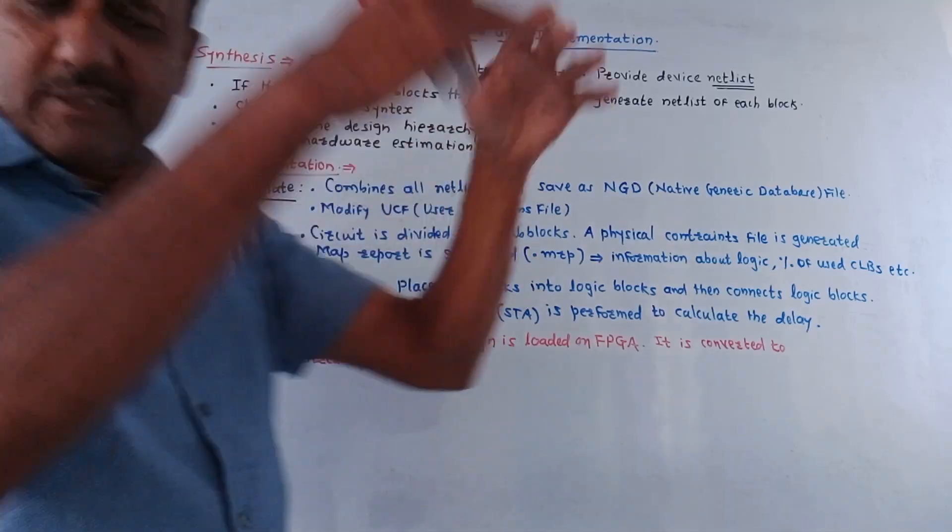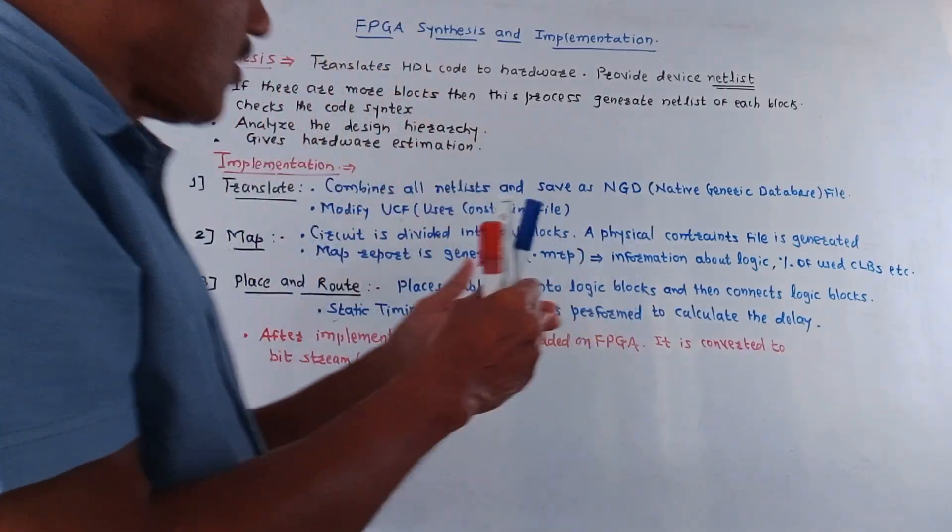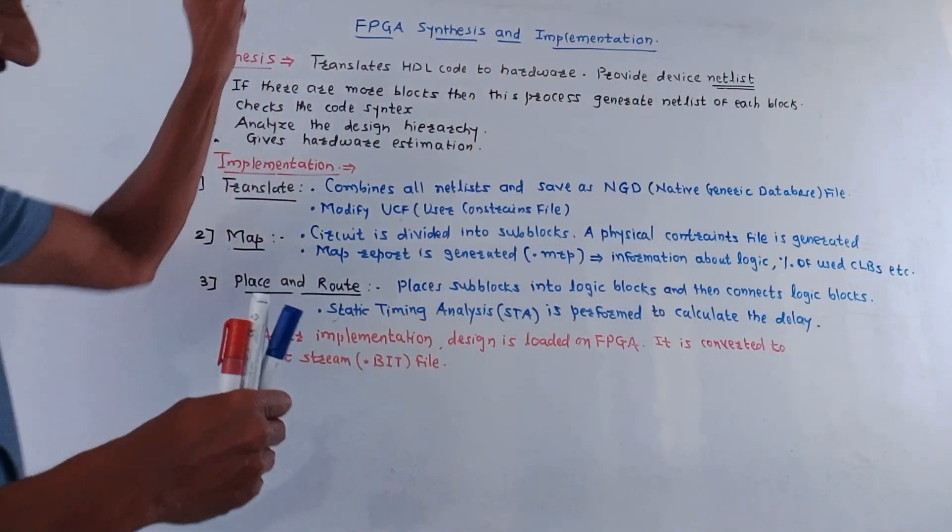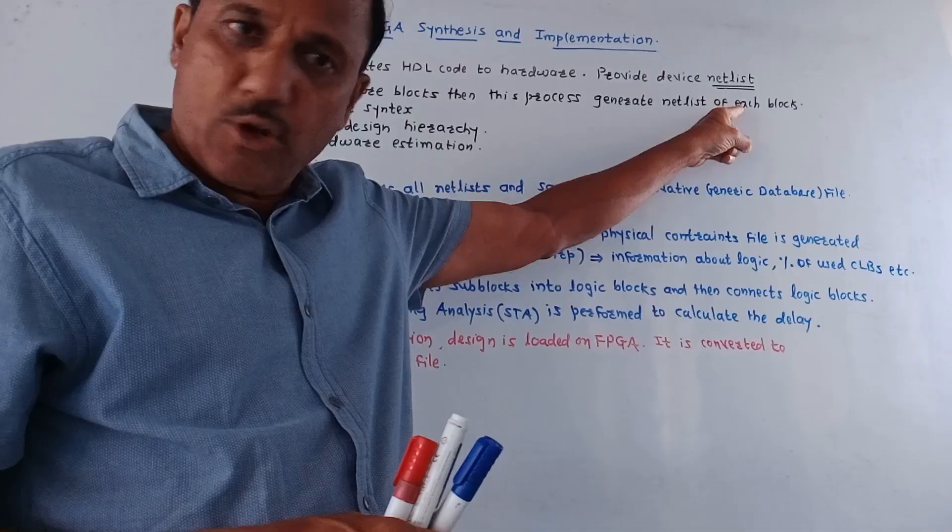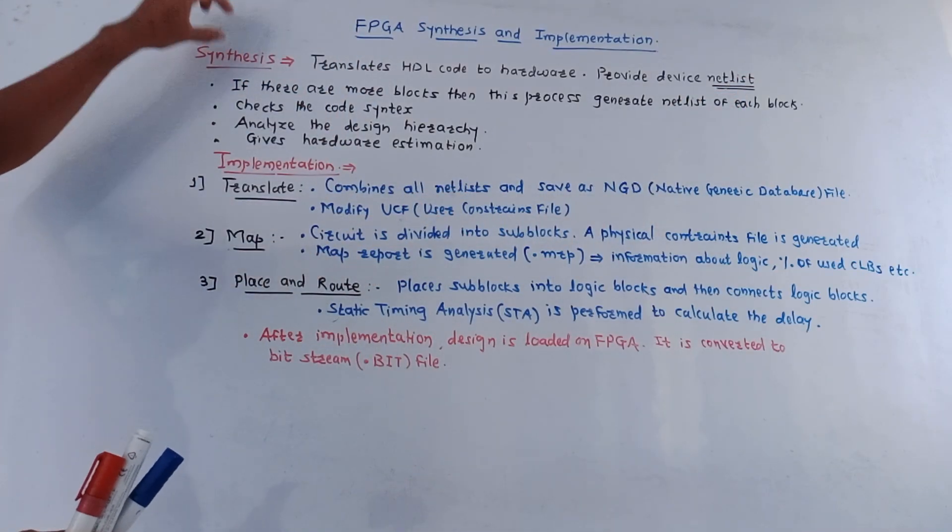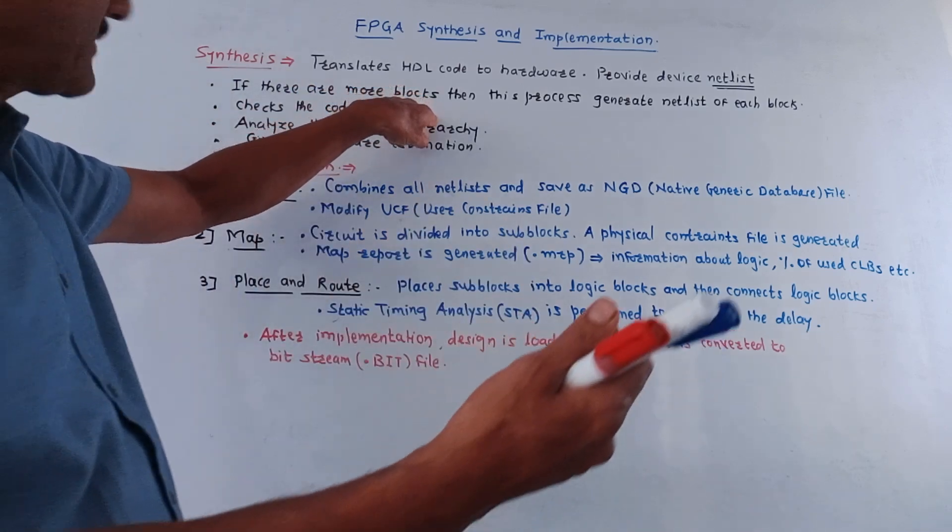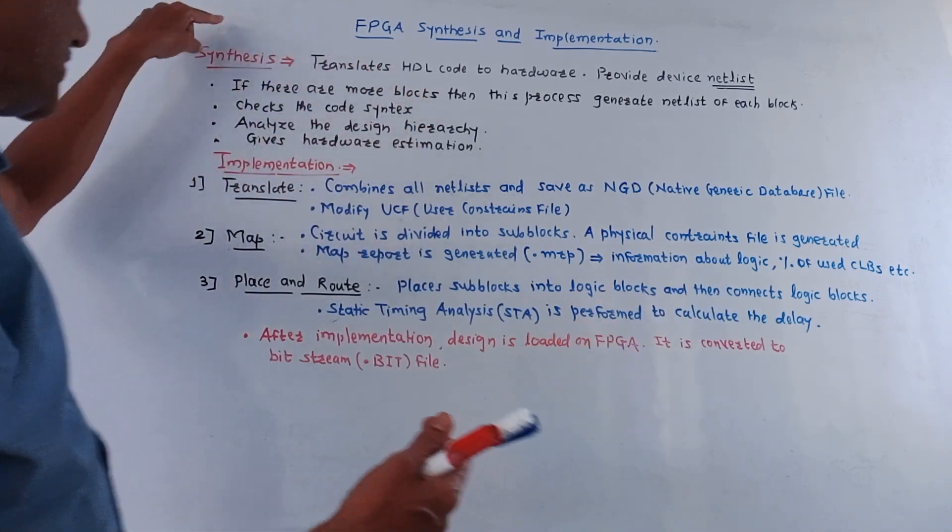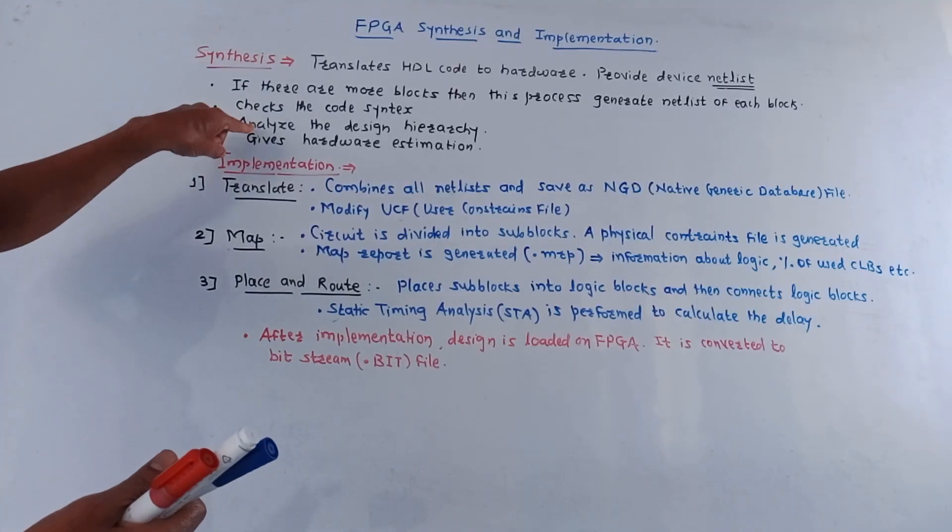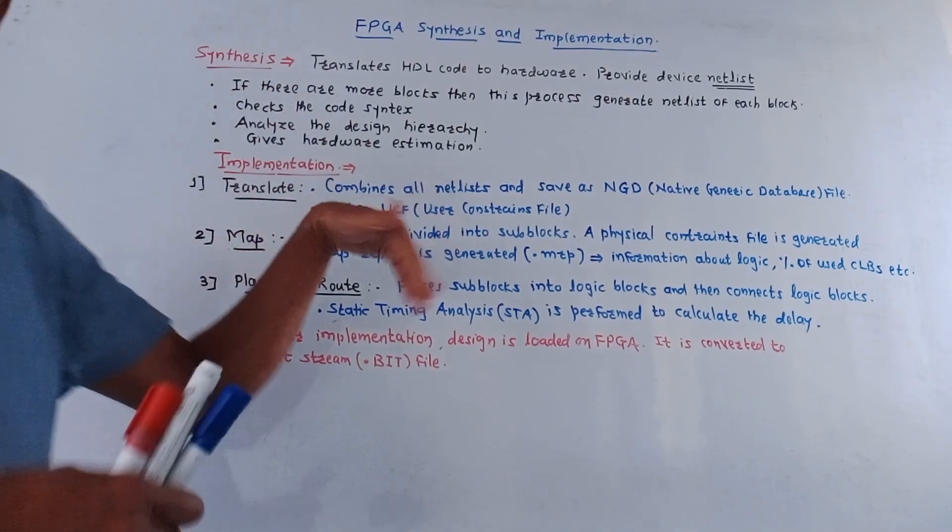Then if the circuit is large and if there are many blocks then it provides the details of each block. That means it generates the netlist of each block separately. Then it also, this step synthesis, also checks the code syntax. If there are any syntax errors then it is checked in this step. Then it analyzes the circuit hierarchy and gives hardware estimation.